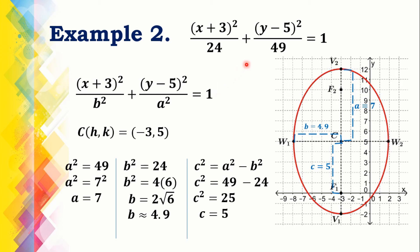From the given equation, we can find the values of A and B. The value of A is 7 and the value of B is 2 times the square root of 6, or approximately 4.9. We need to solve the value of C using the equation C squared equals A squared minus B squared. Substituting the values of A and B and performing the calculations, C equals 5. We will use the values of A, B, and C to sketch the graph of the ellipse.